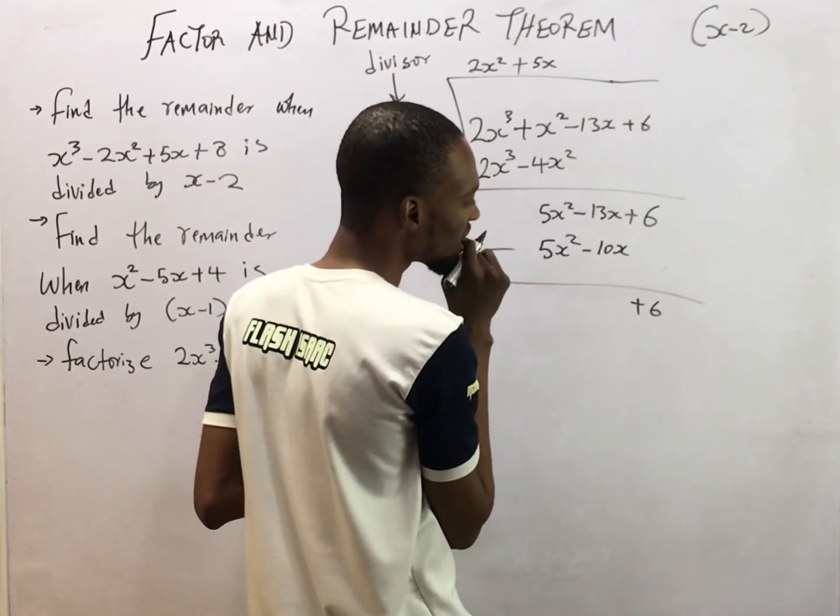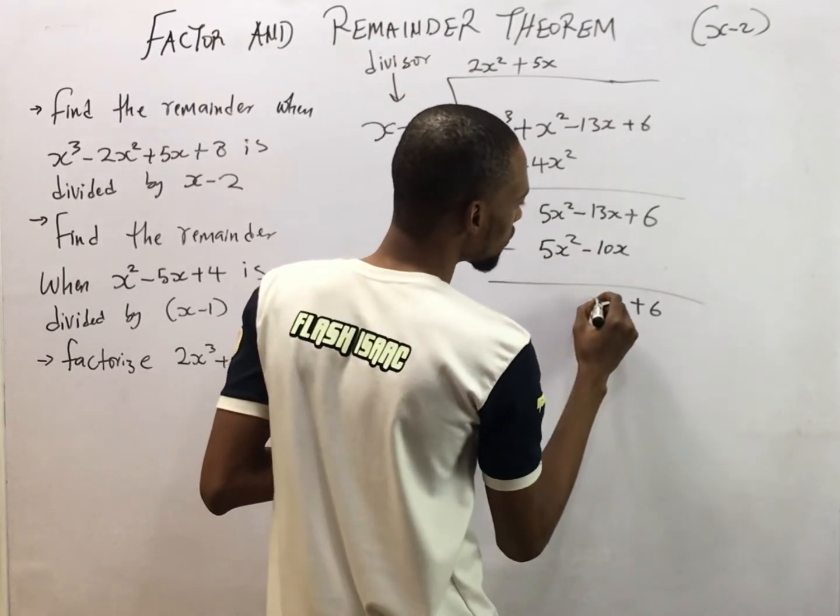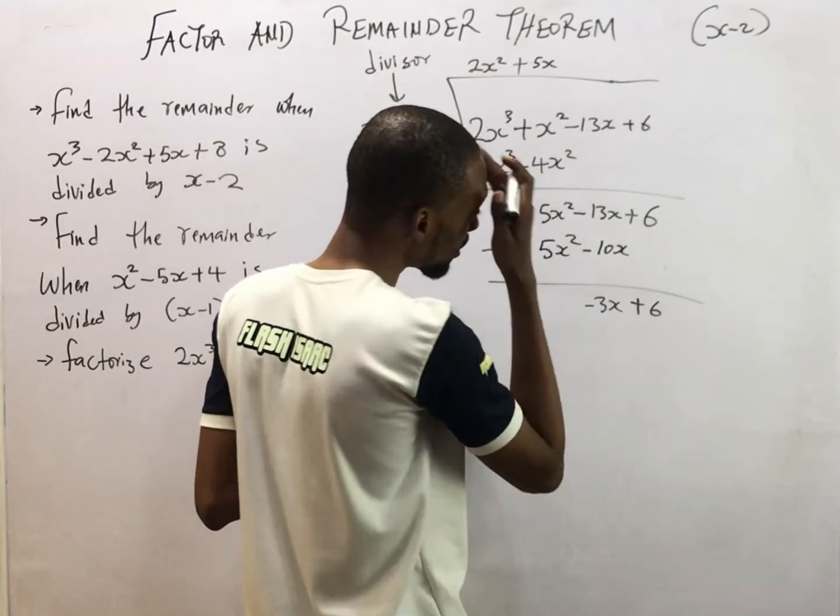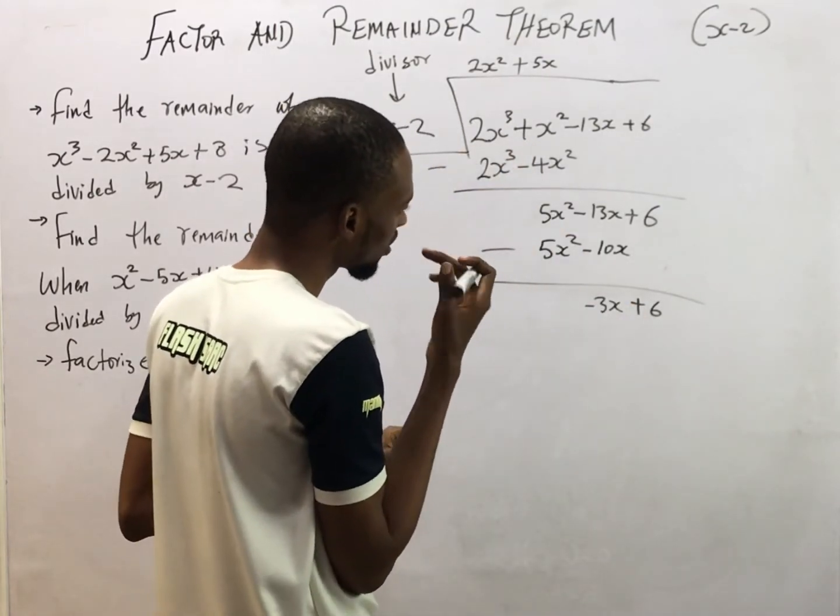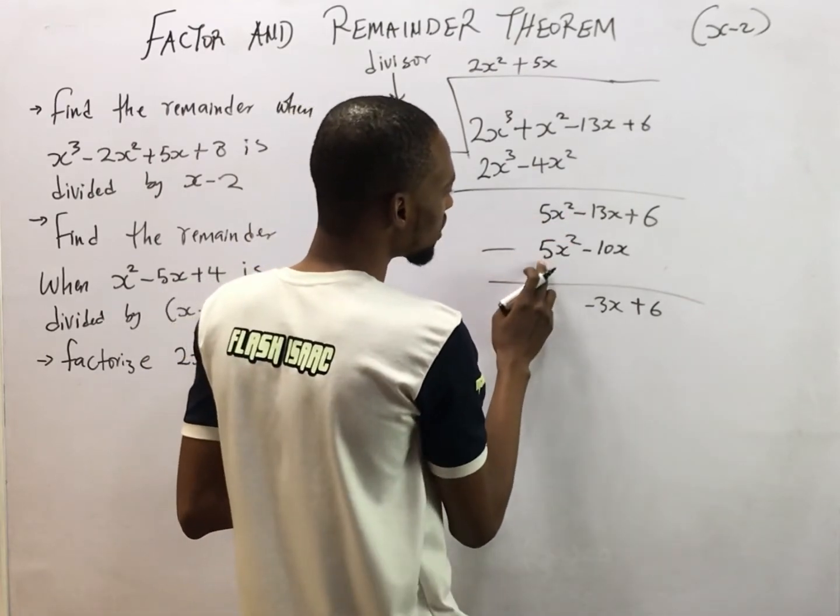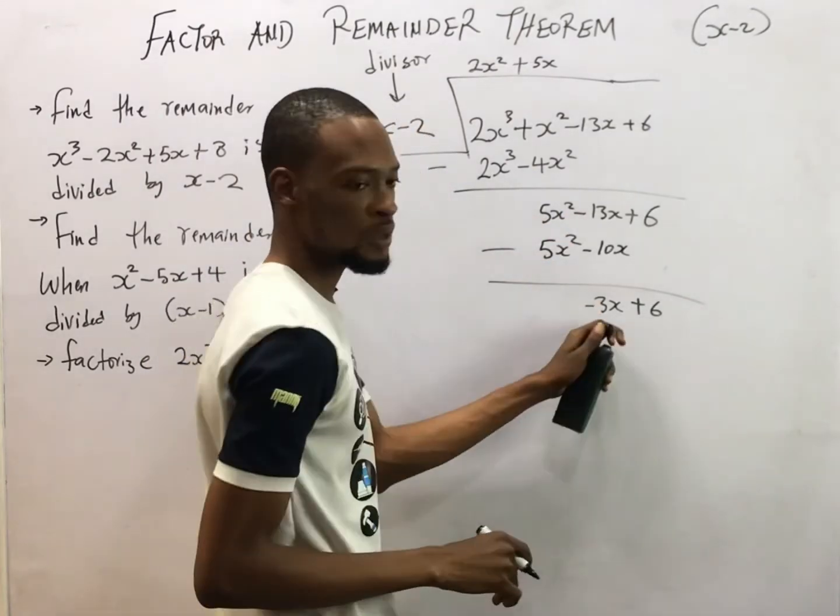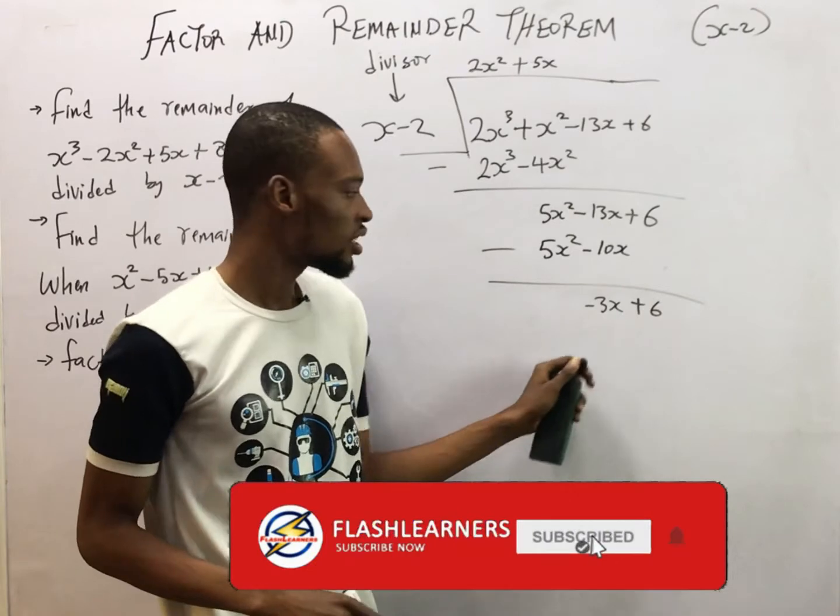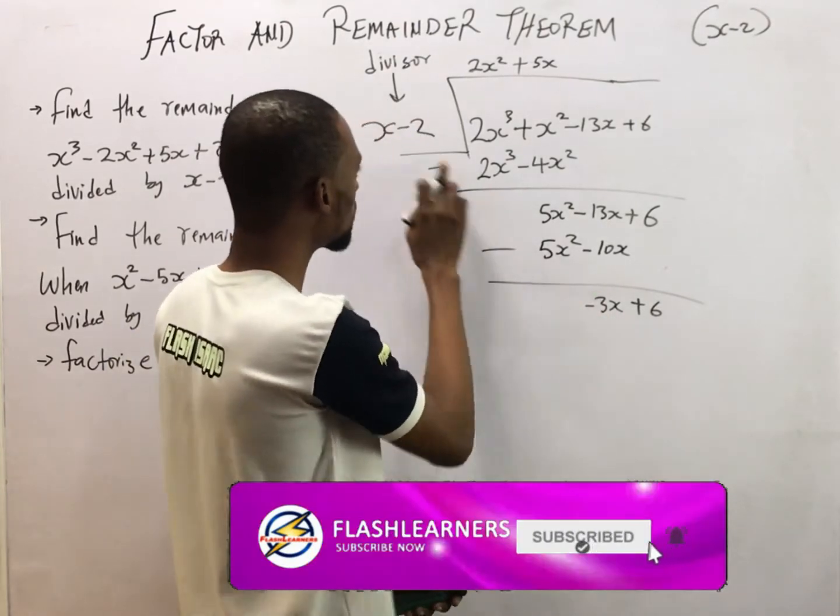So this will give you minus 3S. 5S squared minus 5S squared is 0. So we are left with this now. Then we use this minus 3S to divide this guy again.